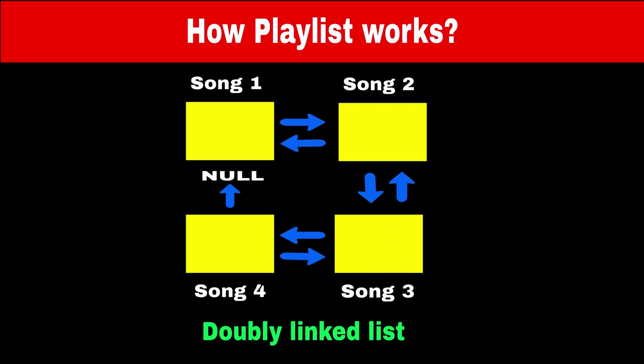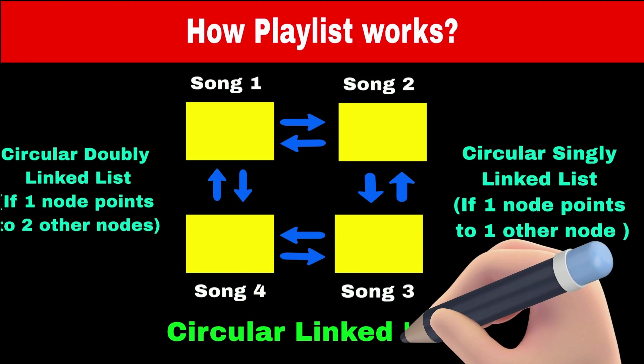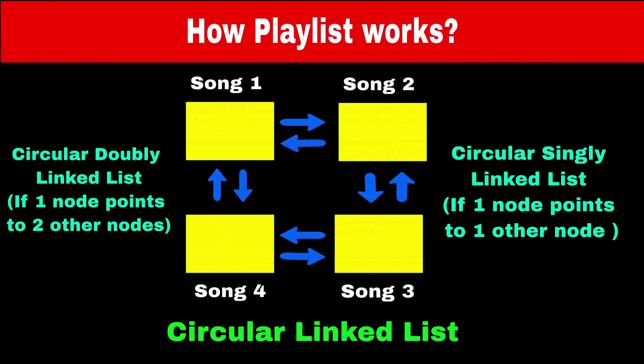Now if we reach the last song, the last node is pointing to null, meaning the playlist is finished. If we want to restart the playlist automatically, then the last node will point to the first node — so when we finish the last song, the first song will automatically play. This looks like a circular list, which is why it's called a circular linked list.